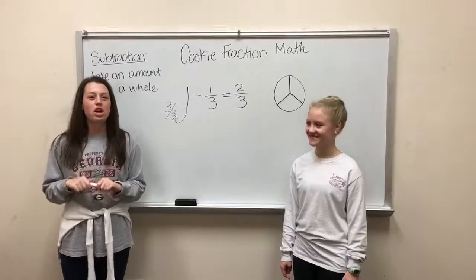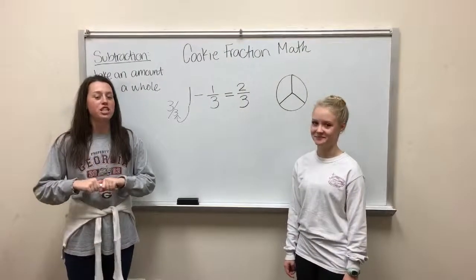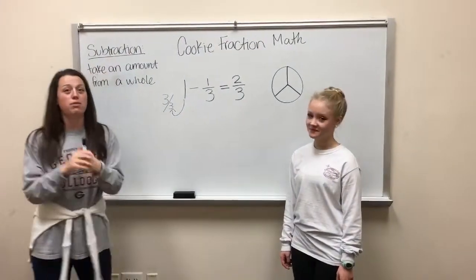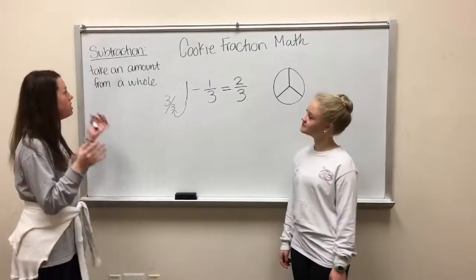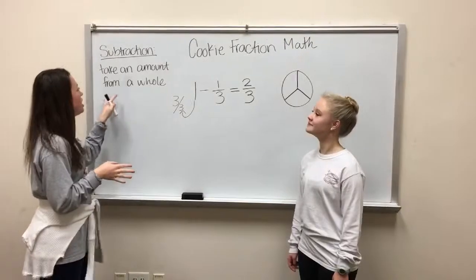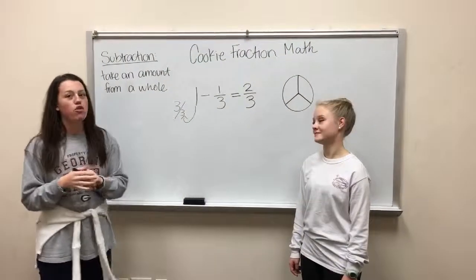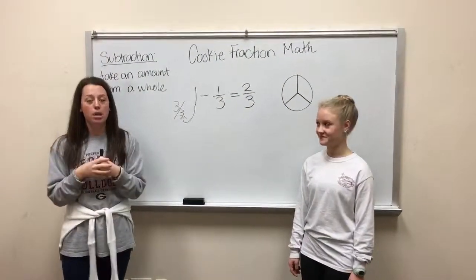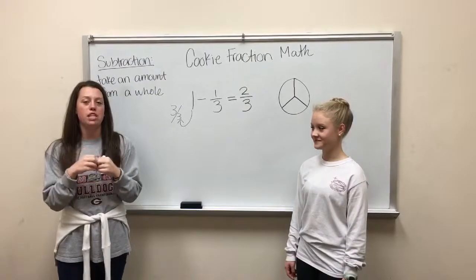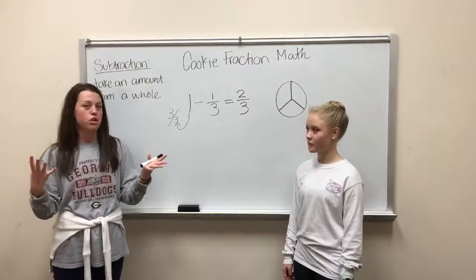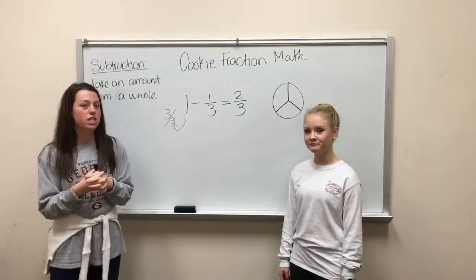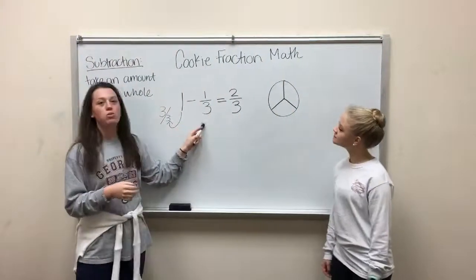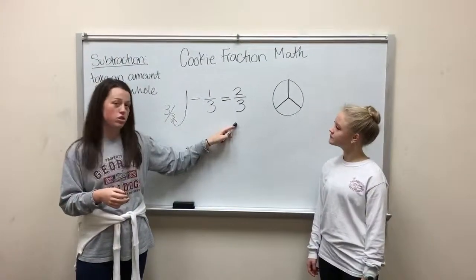Okay, so now we're going to talk about subtraction. We talked about adding — combining two different fractions — and now we're going to talk about subtracting. The definition of subtracting is to take an amount from a whole. So instead of combining pieces, now we're going to be taking parts away. The example problem is: one minus one-third equals two-thirds.